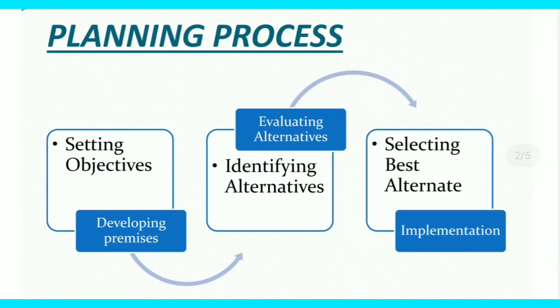As you can see the diagrammatic presentation, whenever we talk about process, there must be a diagrammatic presentation and all the steps must be written in a sequence only. Let's start with the first one: setting objectives. Objective means goals. At the very first step, objectives need to be determined by the management. Only then further steps will be preceded. In the absence of objectives, the planning function can't take place.